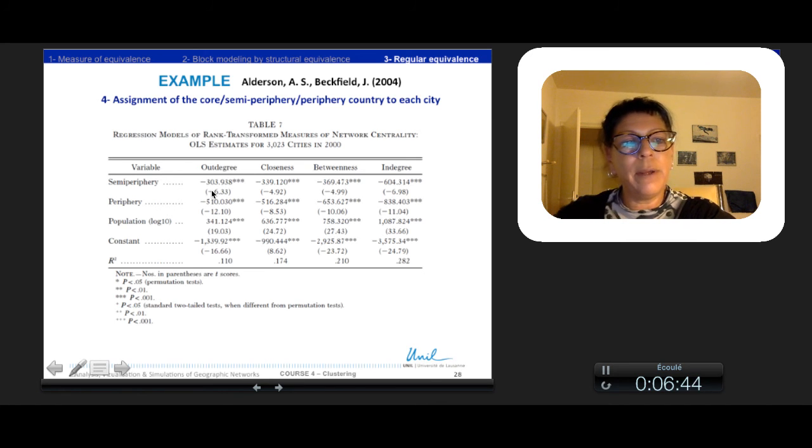However, the interpretation is the same as a classical regression. Here the results show that population matters a lot, and large cities have more power and prestige. In combination, the position as core, semi-periphery, and periphery create an order—core cities are more powerful than semi-periphery, that have more power than periphery.